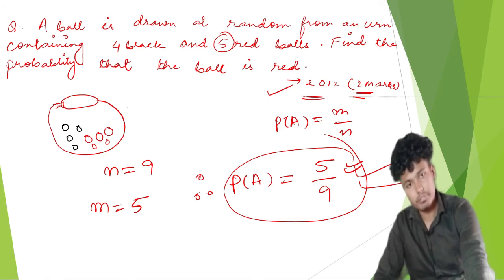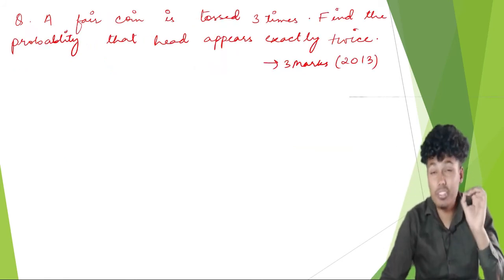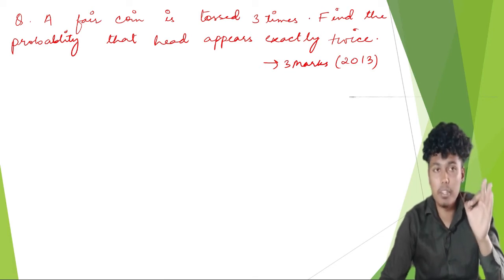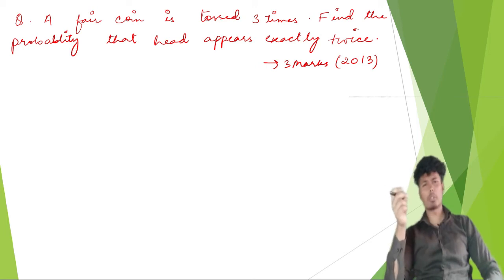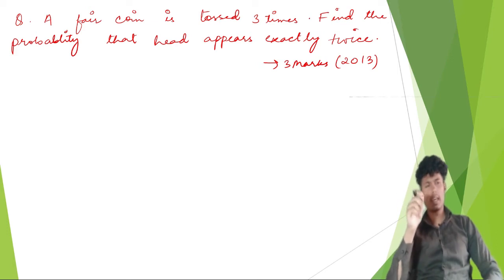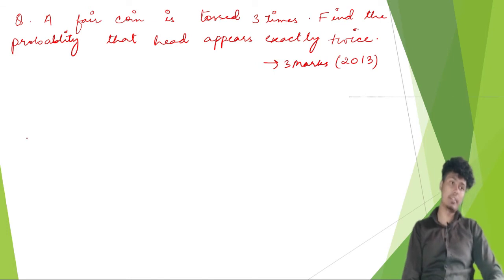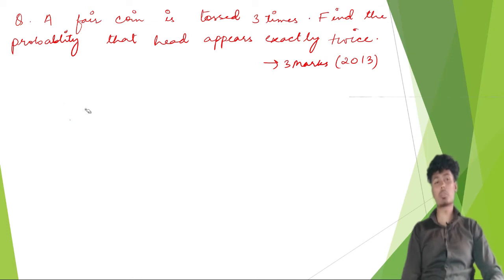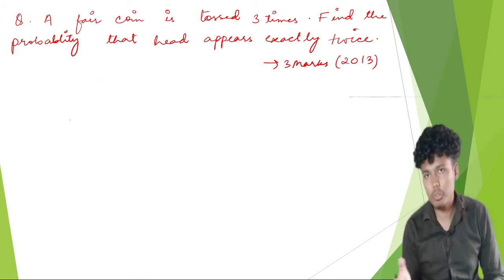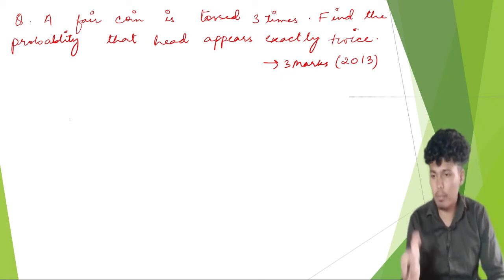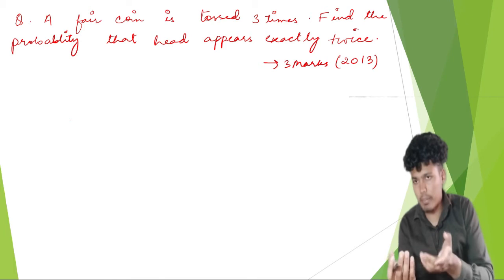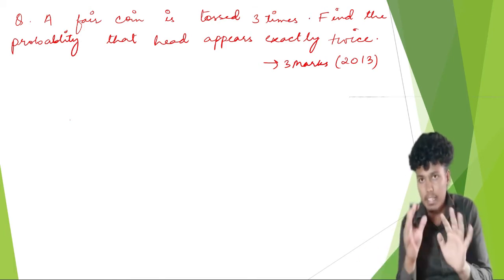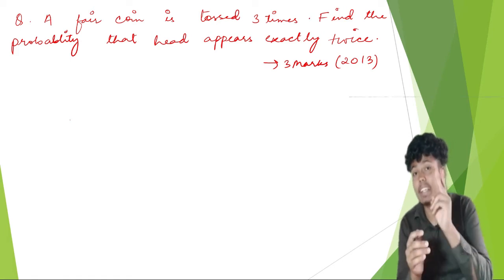Next question: a fair coin is tossed 3 times. Find the probability that a head appears exactly twice. I have a coin — it has head or tail. I toss it 3 times. I need to find the probability of getting head exactly 2 times. First I'll write down the sample space.